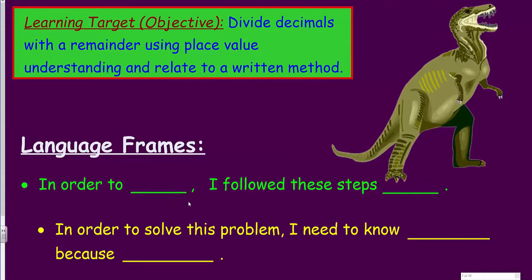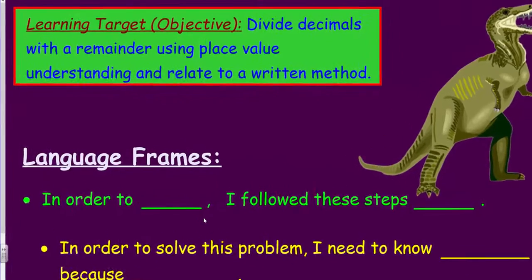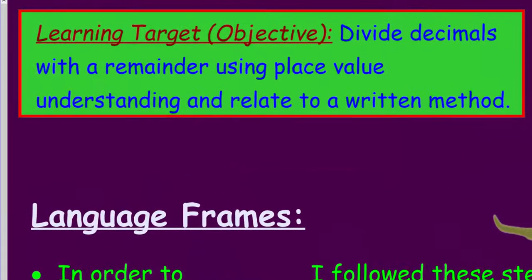Now let's get down to business. My producer is telling me we have a learning target today. Yes, I love learning targets — they help us know what we're doing, what's the purpose. We are going to be dividing decimals but with the remainder, using place value understanding and relate to a written method. This one seems so much shorter than that last learning target we had in a previous video.